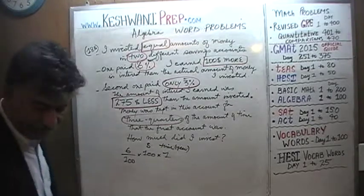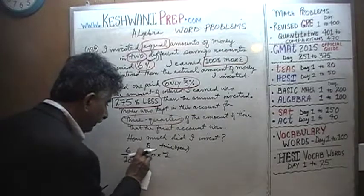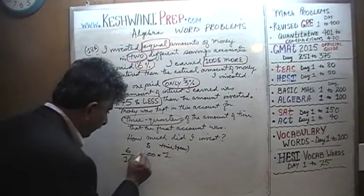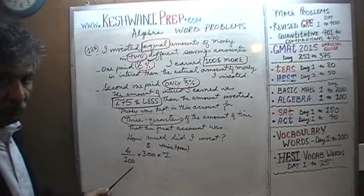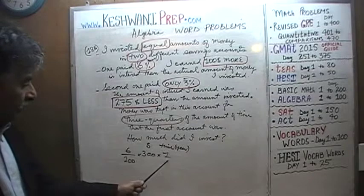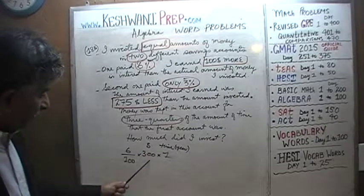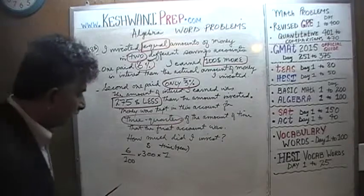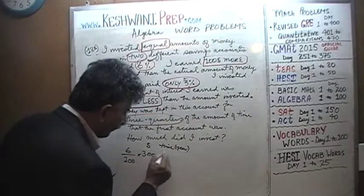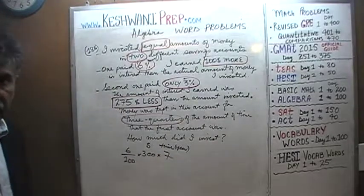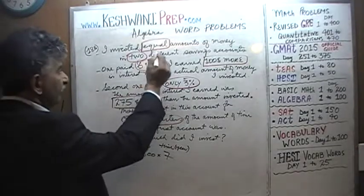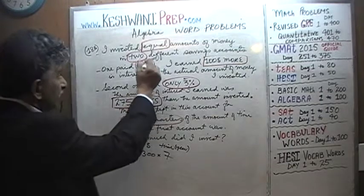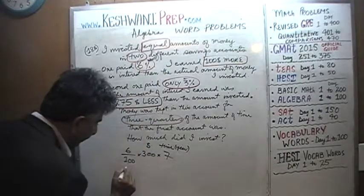If I invest $300 instead of $100, I'm going to earn 6% of $300 — three times as much interest as on $100 in one year. If I invest $300 at 6% for seven years, I'm going to earn 7 times as much. The general expression uses 6 over 100, which is given and stays the same.